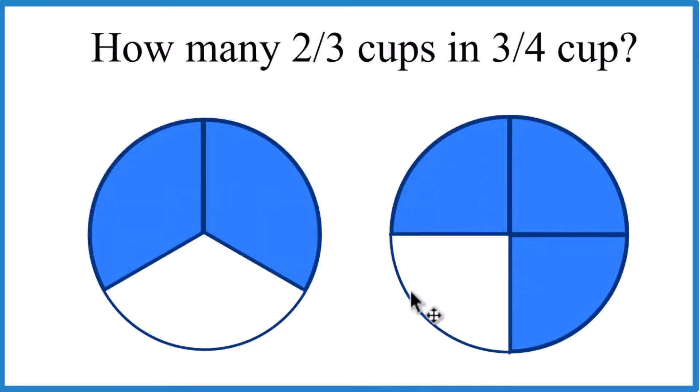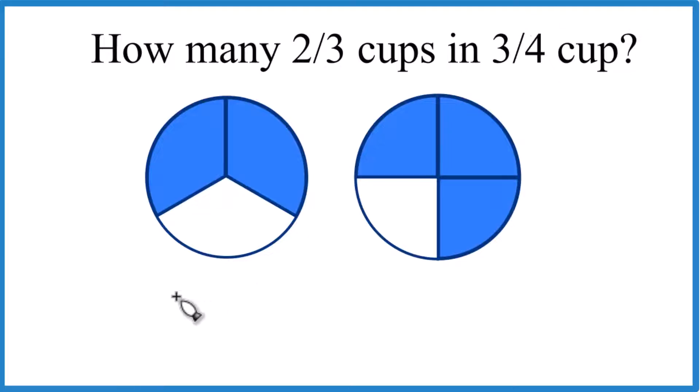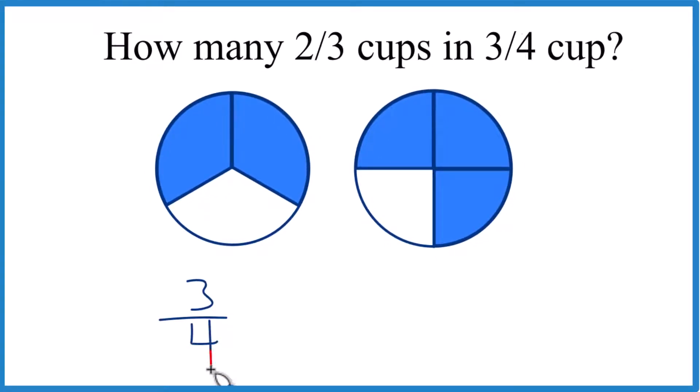Let's solve this mathematically. So we're saying we have three-fourths of a cup here, and we want to know how many times two-thirds goes into it. So three-fourths divided by two-thirds.